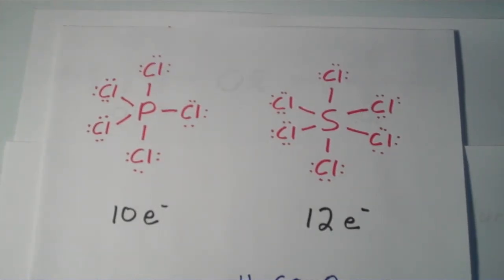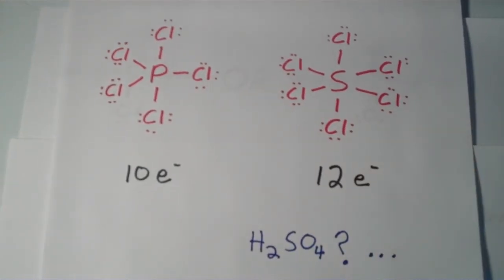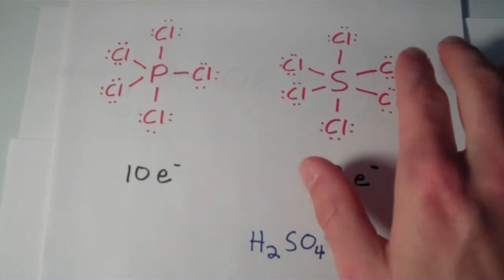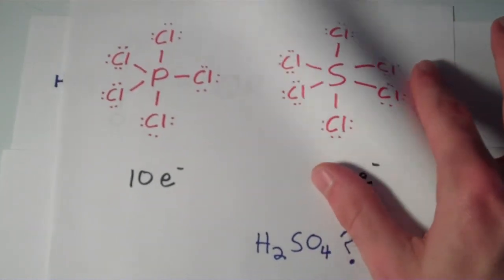Sometimes we're faced with a dilemma in which we can expand the octet of an atom or not. Such a case is the case of H2SO4, sulfuric acid. When we attempt to draw the Lewis structure for sulfuric acid, we're faced with two main possibilities.